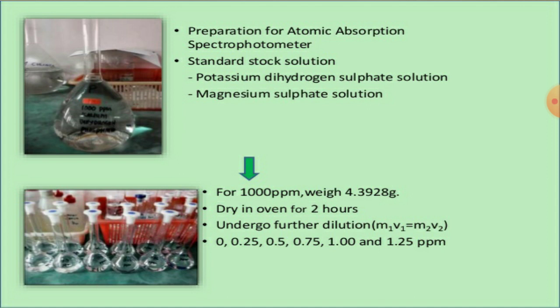The standard stock solutions used are potassium dihydrogen phosphate solution and magnesium sulfate solution. For a 1000 ppm solution, weigh 4.3928 grams of sample and dry in the oven for 2 hours. Using the dilution formula M₁V₁ = M₂V₂, prepare standard solutions of 0, 0.25, 0.5, 0.75, 1.0, and 1.25 ppm.